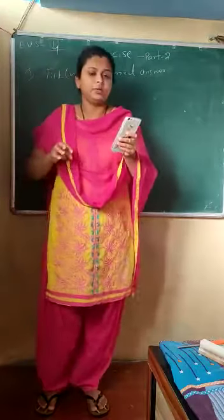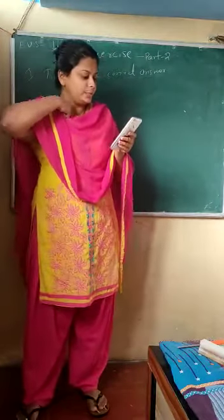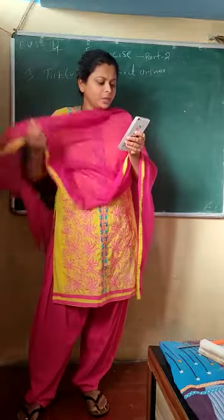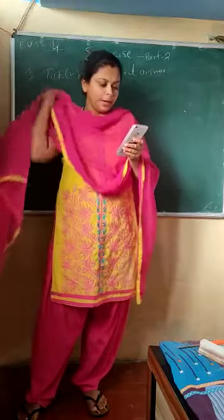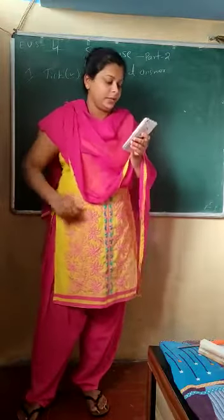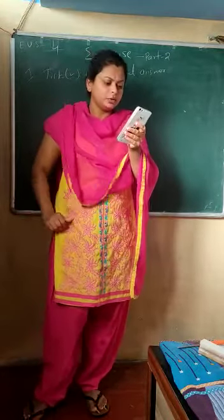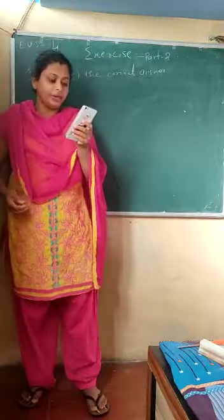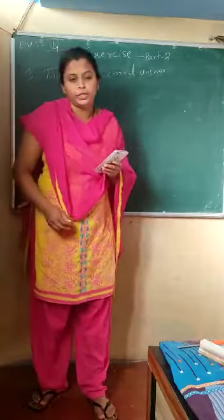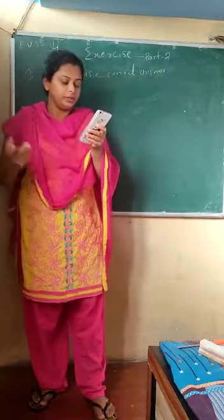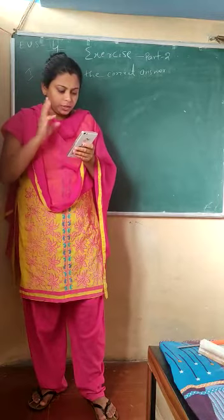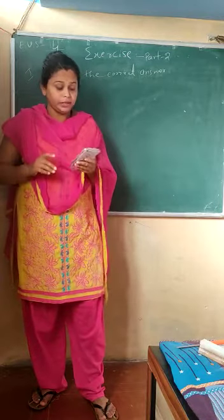First true/false statement: plants which cannot prepare food on their own and grow on other plants are called parasites — this is correct, so it is true. Second statement: the leaves of the croton plant have red-colored chlorophyll — this is false, as there is no red-colored chlorophyll.